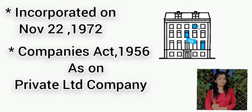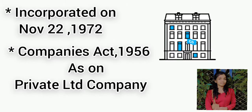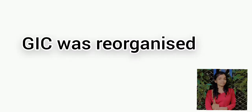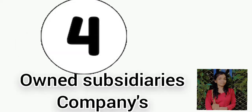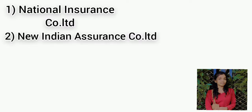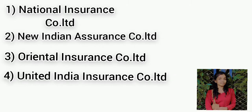GIC was incorporated under the Companies Act 1956 as a private limited company, and was formed to control and operate the business of general insurance in India. GIC was reorganized with four fully owned subsidiary companies: first, National Insurance Company Limited; second, New India Insurance Company Limited; third, Oriental Insurance Company Limited; and fourth, United India Insurance Company Limited.